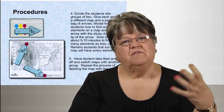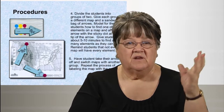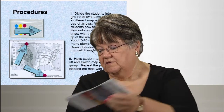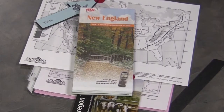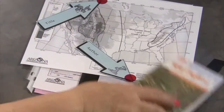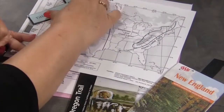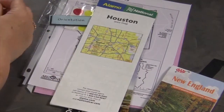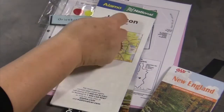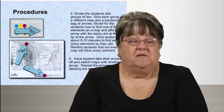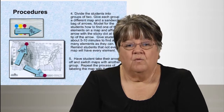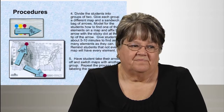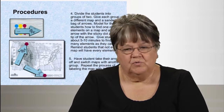Then have students take their labels off, pass the map to somebody else, and start all over with a new map. How many times you do this depends on class time and how fast students are learning. Once they're repeating the process, it becomes like a new puzzle — a new map with different places to look for the elements, so it remains a new activity each time.